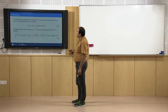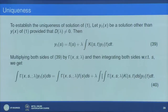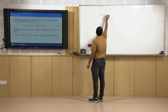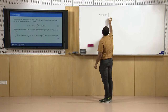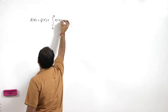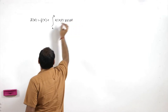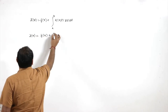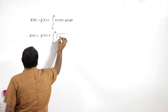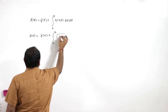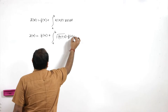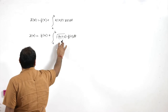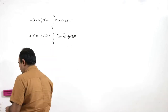To look at the uniqueness, we know that the Fredholm equation y(x) = f(x) + ∫ₐᵇ k(x,t)y(t)dt has solution y(x) = f(x) + ∫ₐᵇ γ(x,t,λ)f(t)dt. We have shown that the solution can be written in terms of the resolvent kernel, given by this equation.